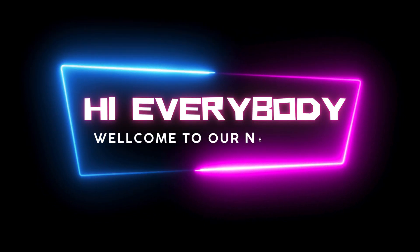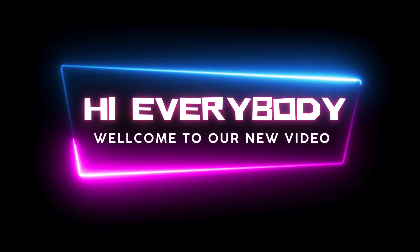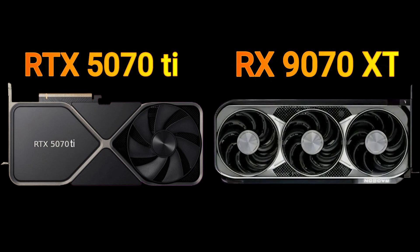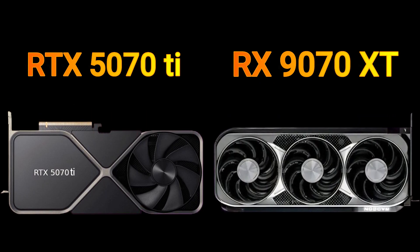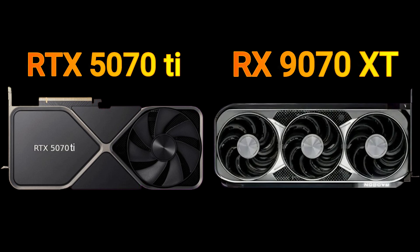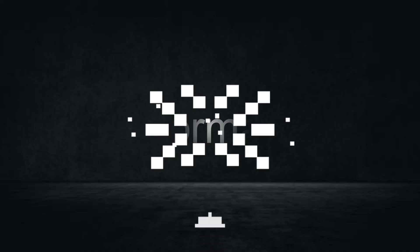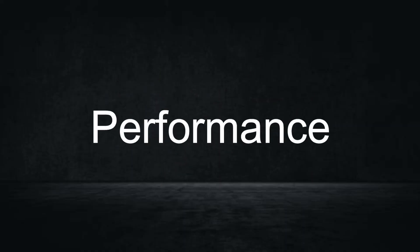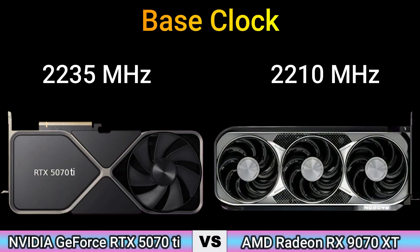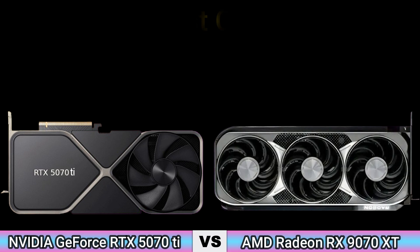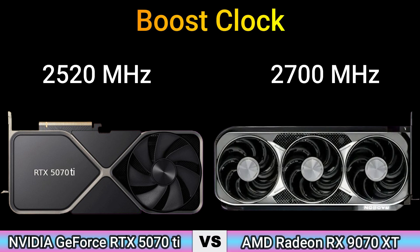Hi everybody, welcome to our new video. Today I will compare two GPUs in this video, so let's go. Firstly, we start with performance. Base clock: 2235 MHz and 2210 MHz. Boost clock: 2520 MHz and 2700 MHz.